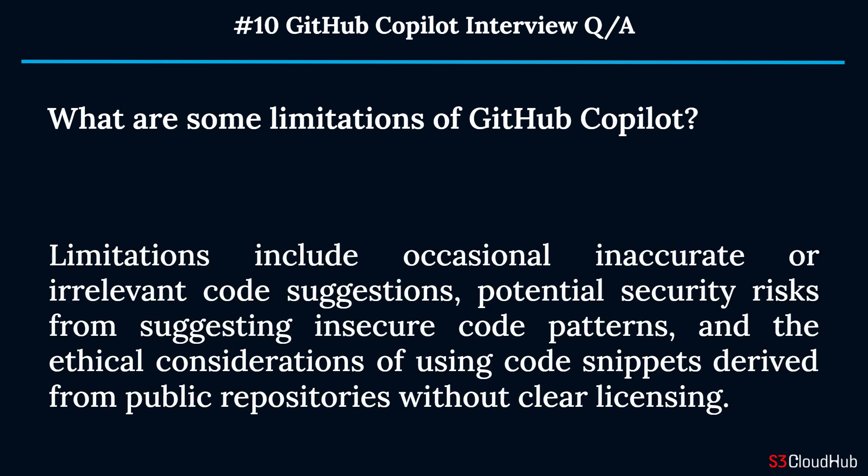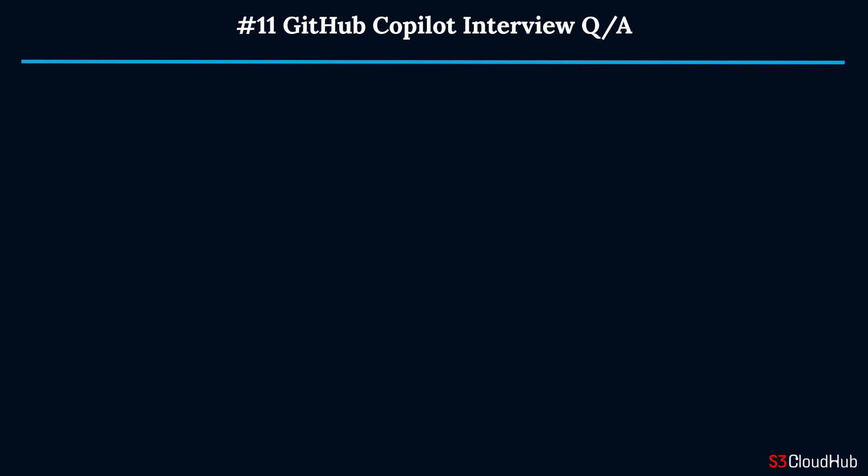Question ten: What are some limitations of GitHub Copilot? Limitations include occasional inaccurate or irrelevant code suggestions, potential security risks from suggesting insecure code patterns, and the ethical considerations of using code snippets derived from public repositories without clear licensing.